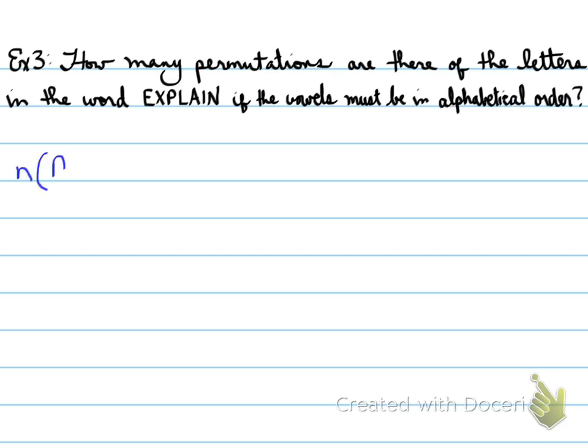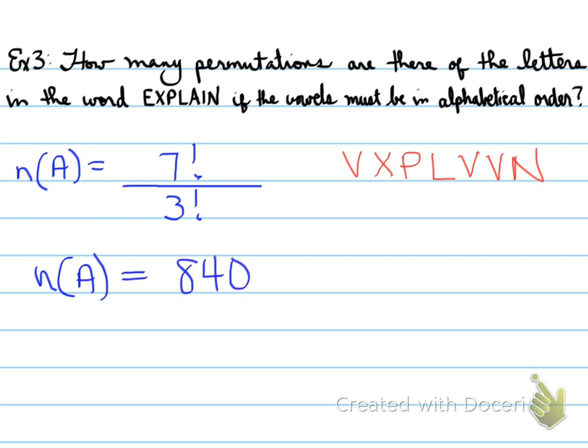Now, how many permutations are there if the letters in the word explain, if the vowels must be in alphabetical order? So n(A) is equal to 7 factorial over 3 factorial. So explain has 7 letters, and the vowels must be in alphabetical order. So you treat the vowels as if they were just vowels. V, vowel, X, P, L, vowel, vowel, N. So basically, each of the three vowels are specific vowels, so you treat them as the same, they're treated the same. So 3 factorial. 7 factorial over 3 factorial will give us an answer of 840. So there are 840 permutations of the word explain.